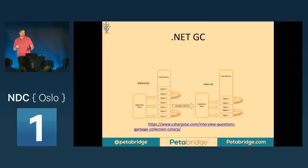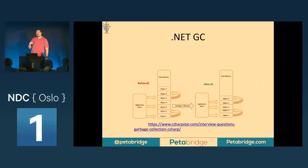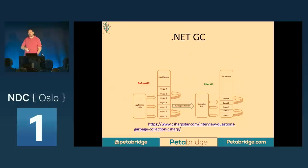The way .NET garbage collection typically works: let's say we have a set of memory with seven objects. The application forms roots to those objects — these are active references for objects not yet marked for deletion. As long as an object is rooted, it will be retained in memory by the garbage collector. An object that is not rooted will be collected and its memory freed and released back to the application. That's what the garbage collection process does: it identifies unrooted objects and frees up that memory.